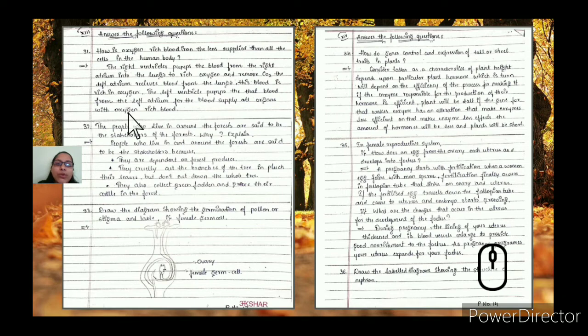People who live in and around the forest are said to be stakeholders of the forest. Why? They are called stakeholders because they are dependent on forest produce or materials as raw materials. They cut off some branches and pluck leaves but do not cut down the whole tree. They also collect green fodder and graze their cattle in the forest.